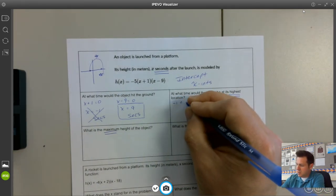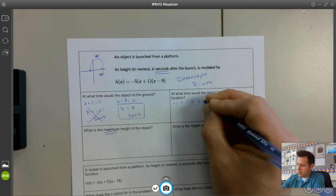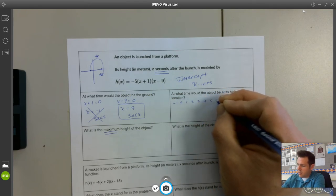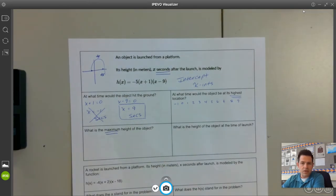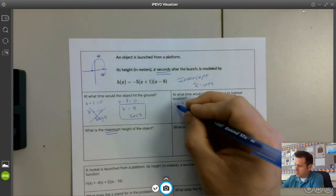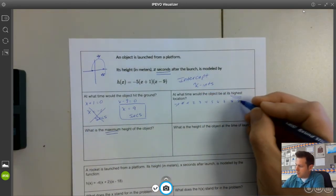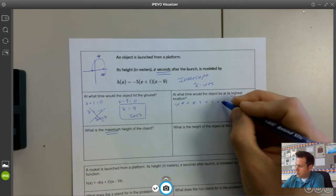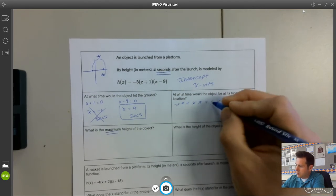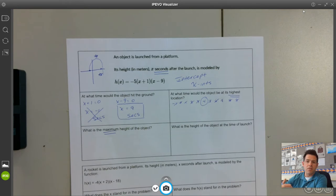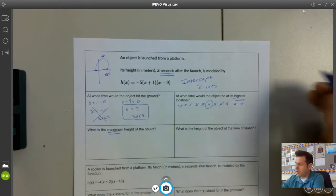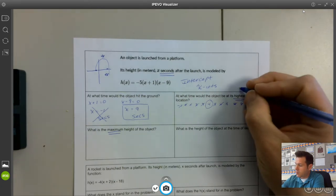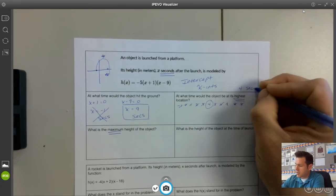Sometimes if we just draw out all of our numbers that go in between two intercepts, so negative one to nine, we could figure out that way. Zero, one, two, three, four, five, six, seven, eight, nine. In the middle of the two X intercepts would be the number four. So our highest location, the time would be at four seconds.